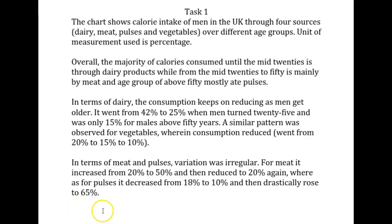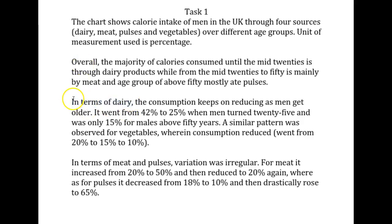We can say here: overall, it is clear that each age group had a strong preference for the main source of pulses, yet none of the groups preferred vegetables, which remained low in consumption throughout the periods. That would be good. I'm saying we should increase our use of academic language, but your work is coming along really well. I really like some of the phrasings you've done here — 'in terms of dairy,' 'in terms of meat and pulses,' and 'wherein' as well is a fantastic word to see.